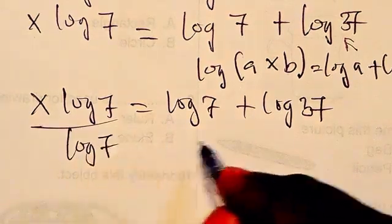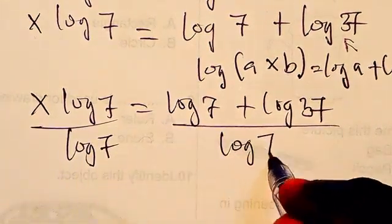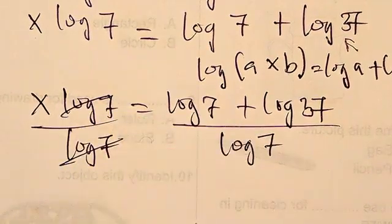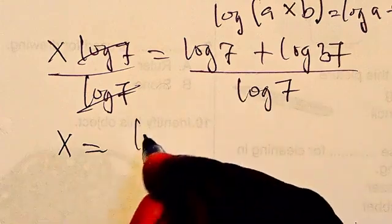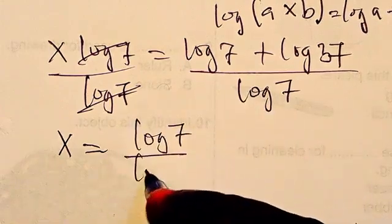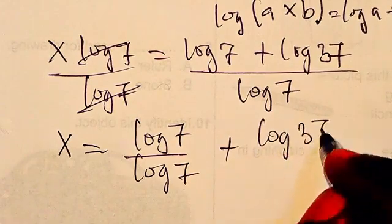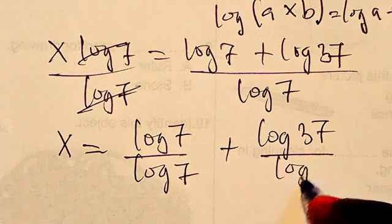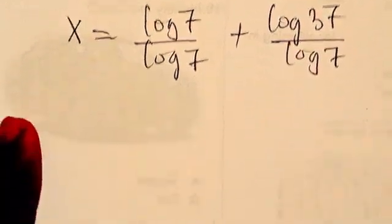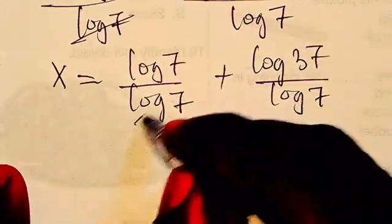So now from there the next thing we are going to do is divide both sides by 7. We divide both sides by 7. So you can see that we cancel this, so we have x to be equals log 7 divided by log 7 plus log 37 divided by log 7.